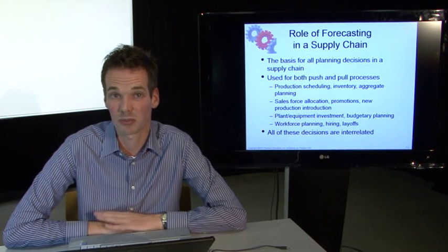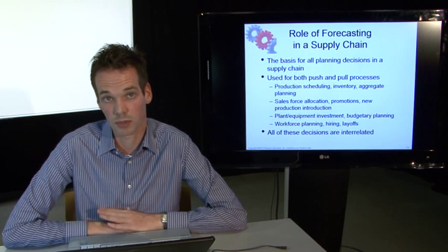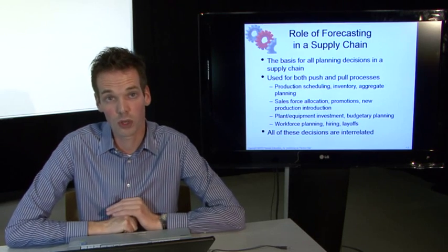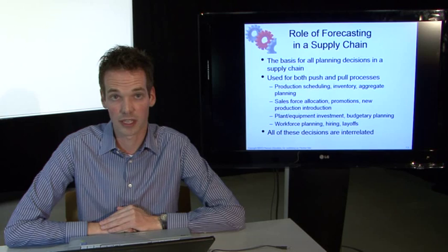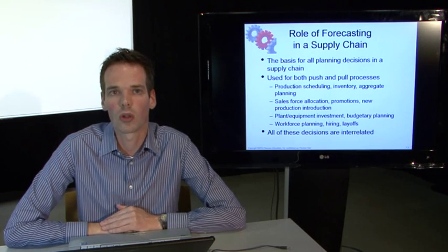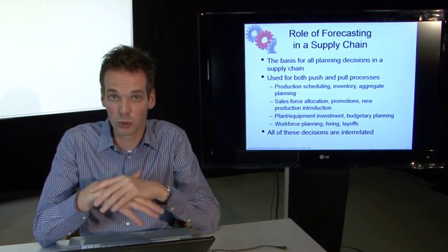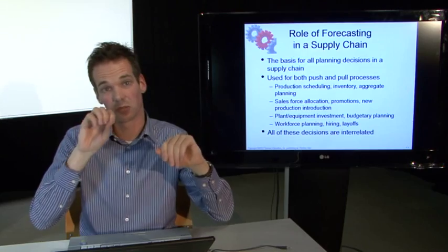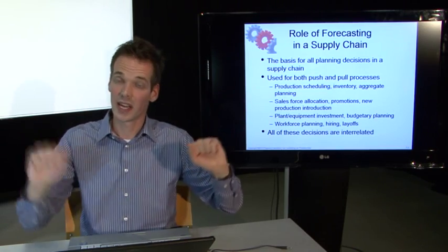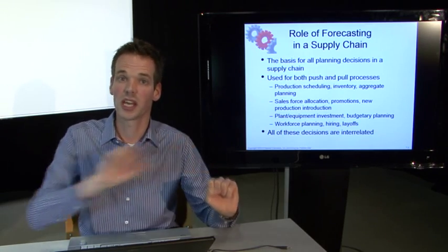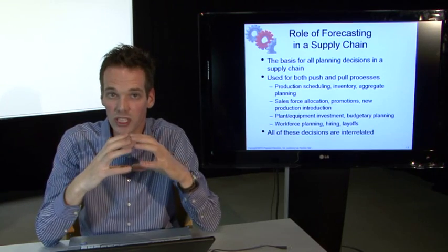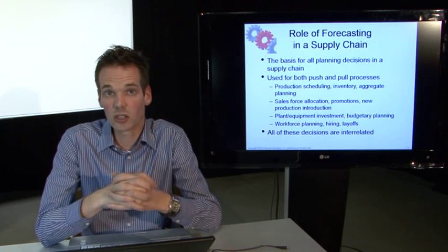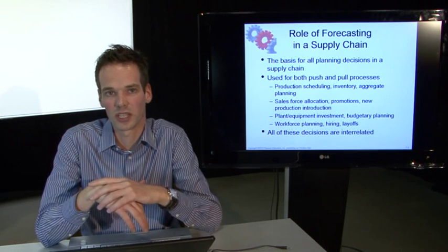And so this chapter, chapter 7, is a very important chapter in the book of supply chain management of Chopra we use. This chapter is used for both the push and the pull processes within the supply chain. Please recall chapter 1. In chapter 1 we talked about the push-pull boundary. We start with the supplier, then the manufacturer, distributor, retailer and consumer. And somewhere along that chain of five stages there is the push-pull boundary. And the push-pull boundary, most of the times the inventory build-up takes place.